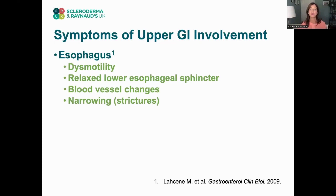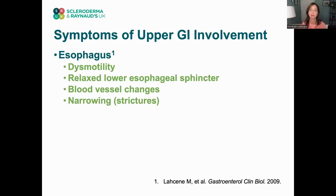In scleroderma, the lower esophageal sphincter stays relaxed and open all of the time. If you're sitting upright, gravity will keep the stomach contents down. But if you recline, lay back, or when you sleep, the contents of the stomach — the acid — can come up into the esophagus. We also see blood vessel changes in the esophagus, which can cause esophagitis, which is inflammation in the esophagus.